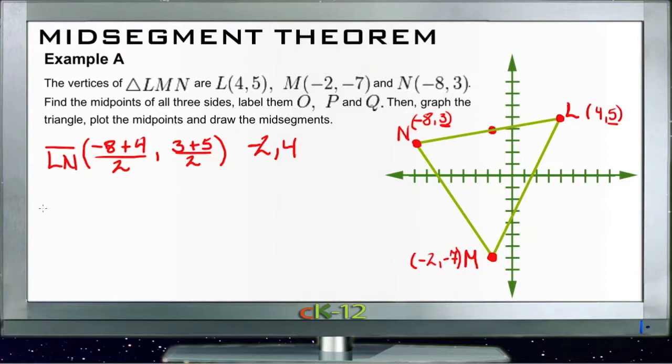And then if we find the midpoint of LM, the midpoint of that one is going to be 4 plus -2 divided by 2, and 5 plus -7 divided by 2. So we'll have 2 over 2, that's 1, and -2 over 2, that's -1. So we have (1, -1) right there, that looks better.